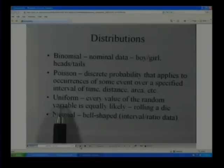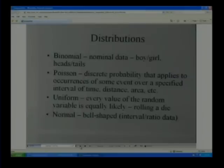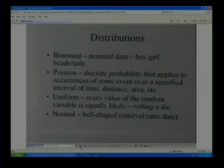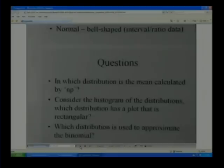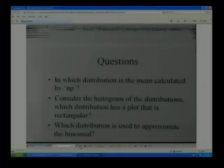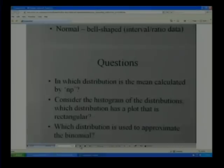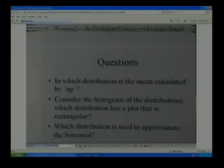Uniform. Every value of the random variable is equally likely, such as rolling a dice. And then normal is a bell shape and it's measured on interval or ratio data. So let's ask some questions. Which distribution is the mean calculated by NP? And then consider the histogram of the distributions. Which distribution has a plot that's rectangular? And which distribution is used to approximate the binomial? Okay. So we're going to go through and answer those questions.